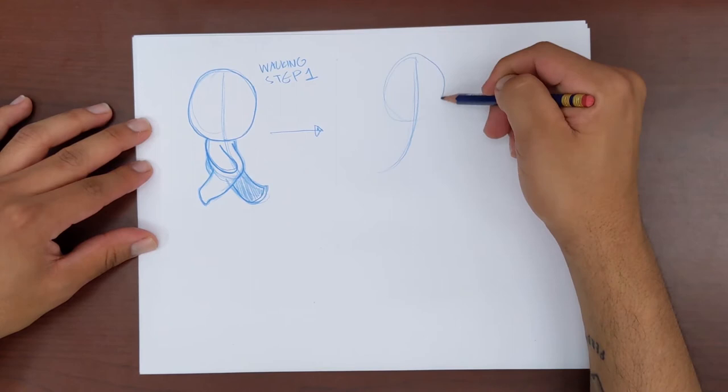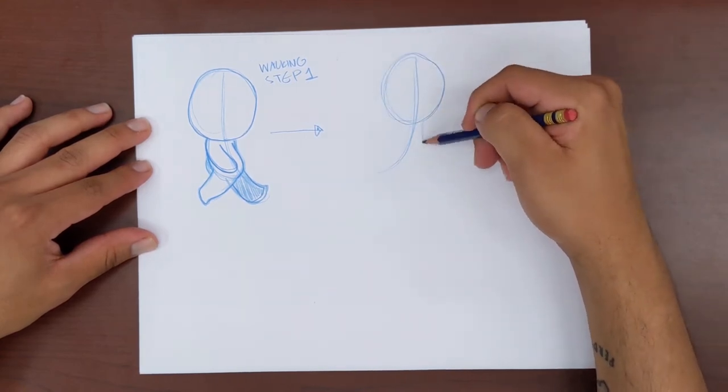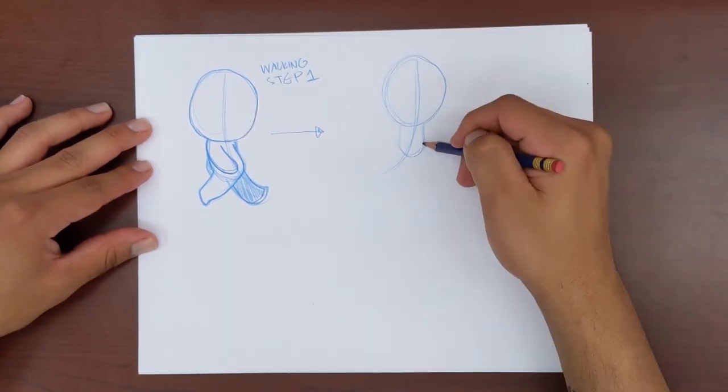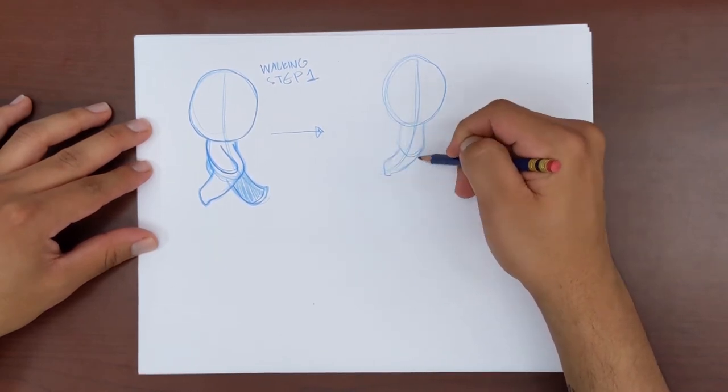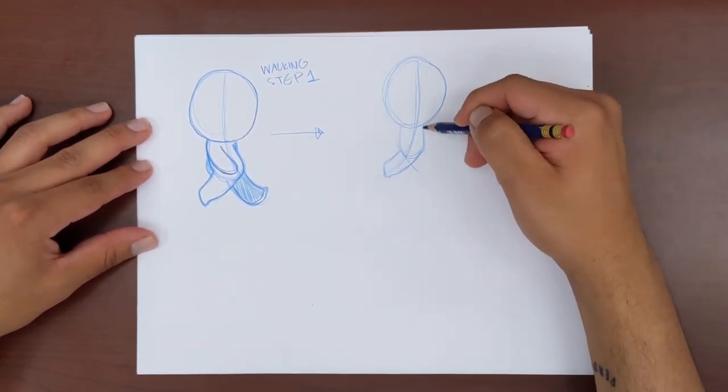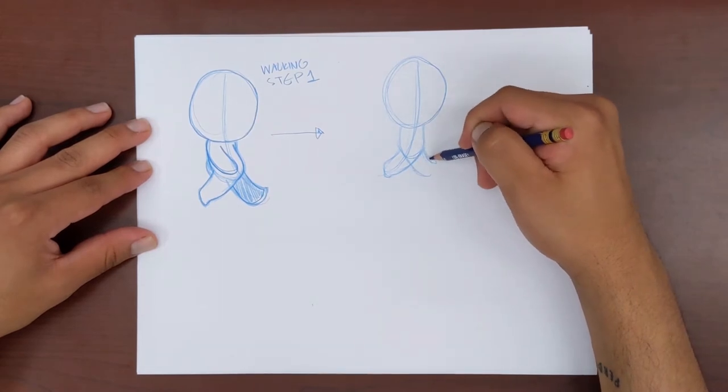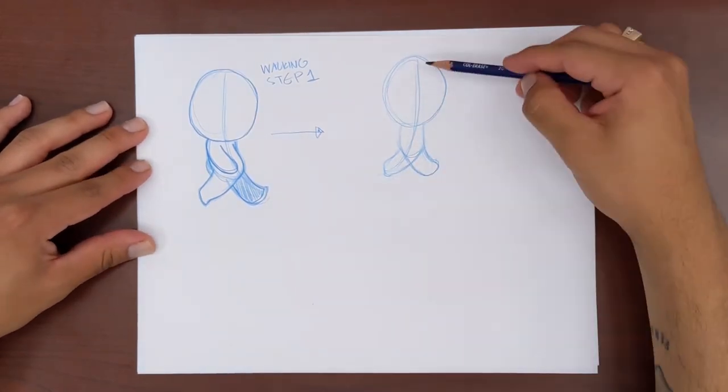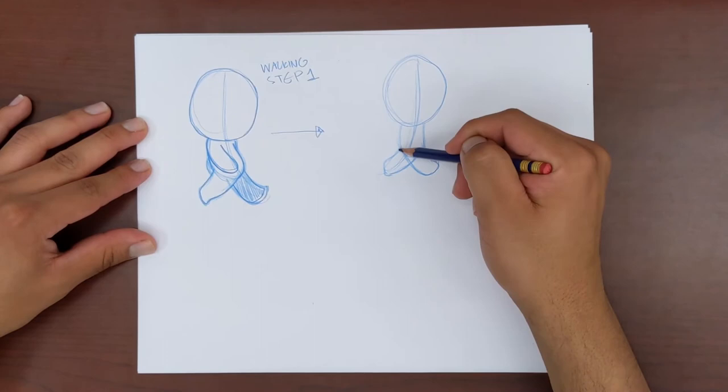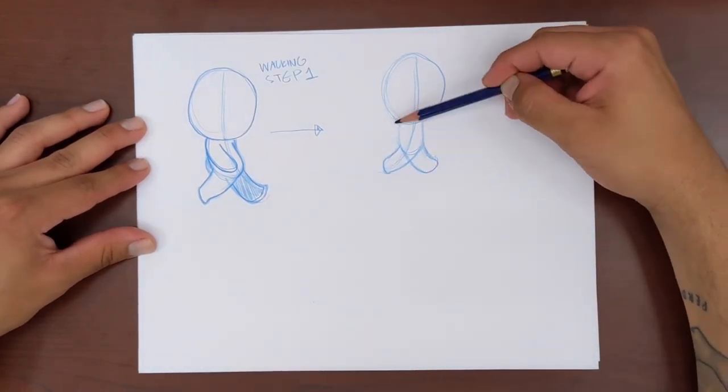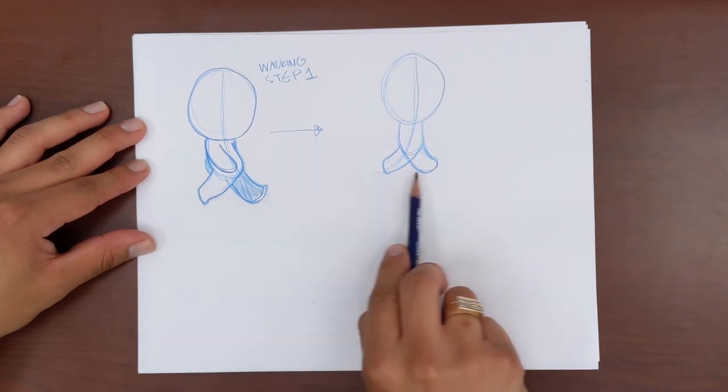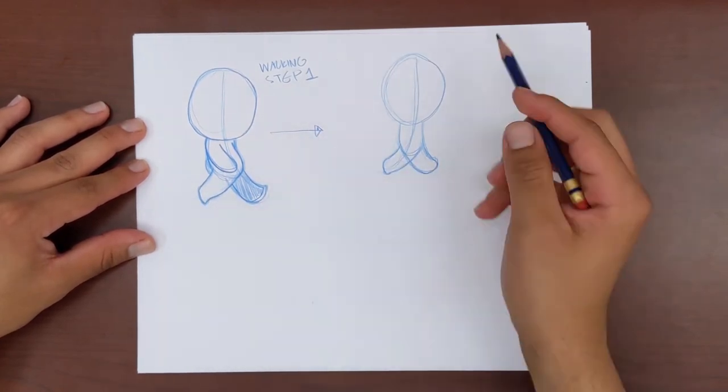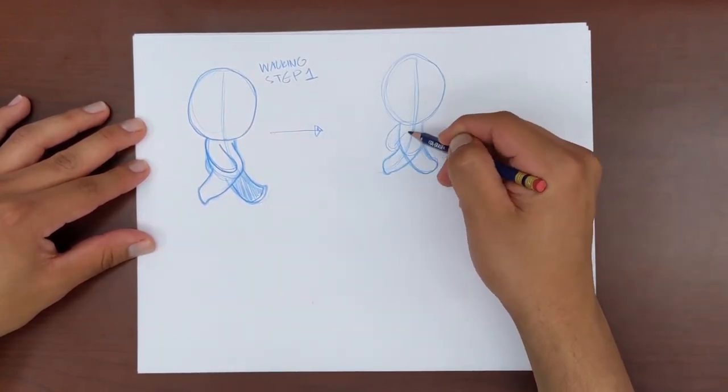We can now use our line of action to illustrate our leg taking our backward stride. We can also use the natural curve of our character's back to draw our leg taking the forward stride. Notice how in this next pose, our legs are switching directions, and our leg that was stepping forward is now stepping backward, and our leg that was stepping backward is now stepping forward.